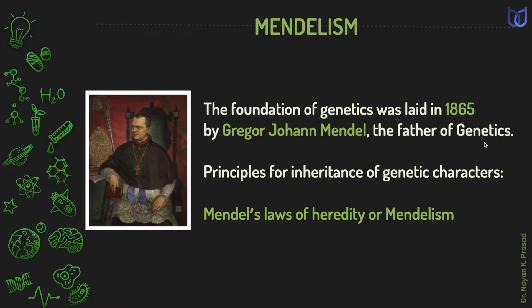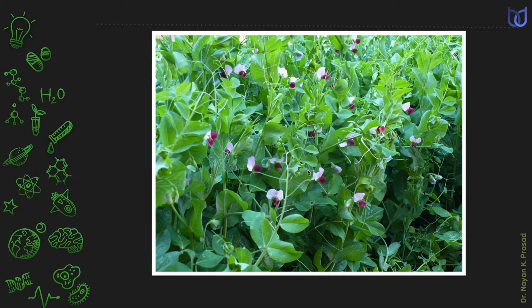He gave his basic laws of genetics with the help of his several experiments on garden pea plants. He gave principles for inheritance of genetic characters which are called Mendel's laws of heredity or Mendelism. Pea plants are commonly found in our locality also. These are annual plants and of economic importance. In pea plants, self-fertilization and cross-fertilization both can be performed.